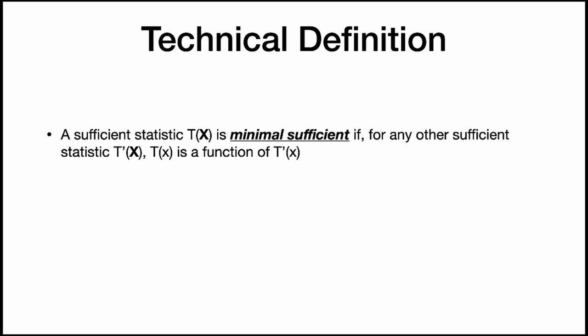So what is our technical definition of minimal sufficiency? A sufficient statistic t(x) is minimal sufficient if, for any other sufficient statistic t prime, t(x) is a function of t prime of x.